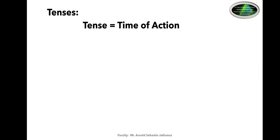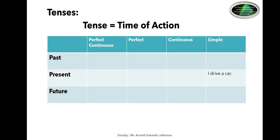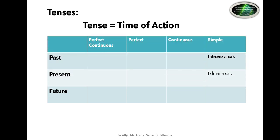Let us understand the importance of tenses with the help of an example. Let's take the most basic sentence in the simple present tense: 'I drive a car.' This type of sentence signifies the ability that you know how to drive a car. If we want to talk about it in the past simple, it turns up to be 'I drove a car,' which refers to: in the past I used to drive a car, but now I have stopped driving.